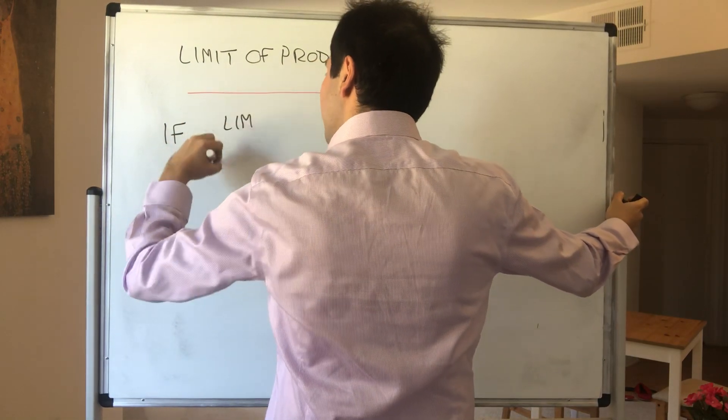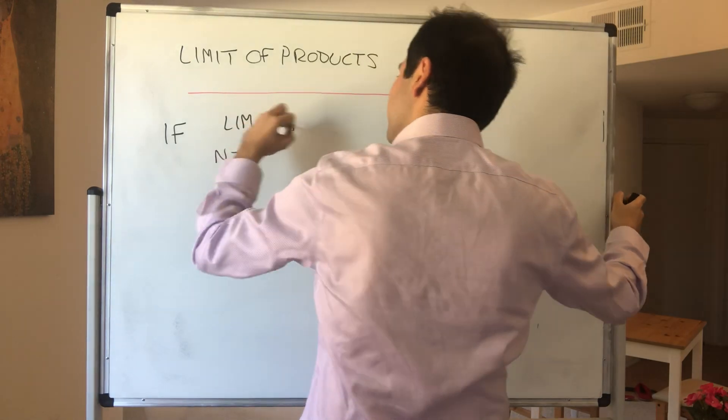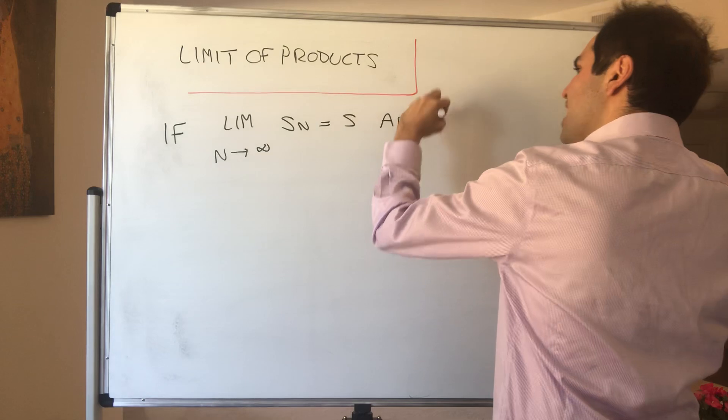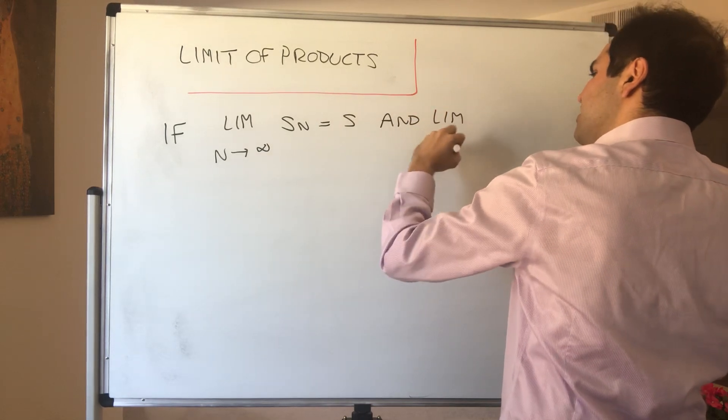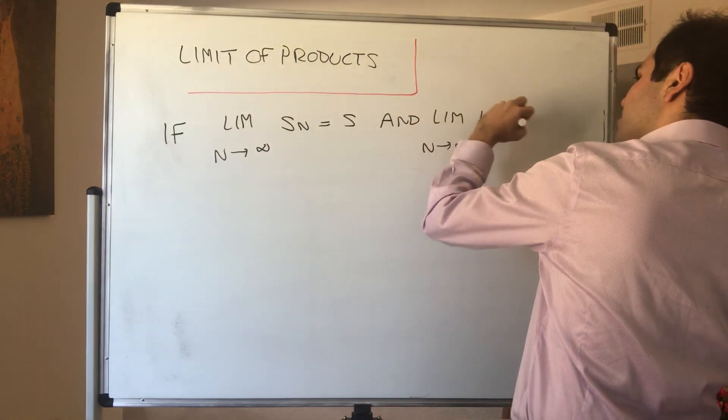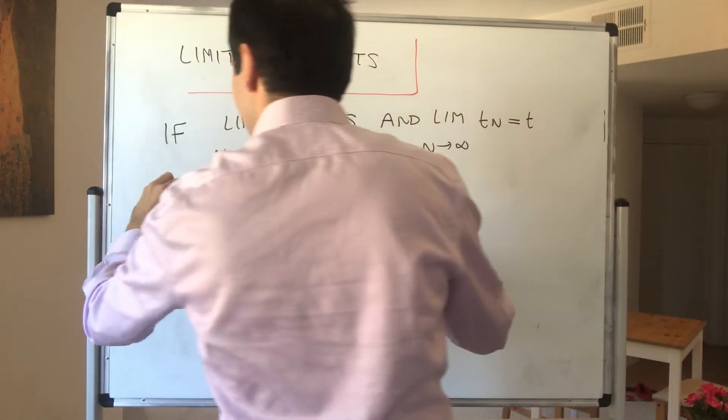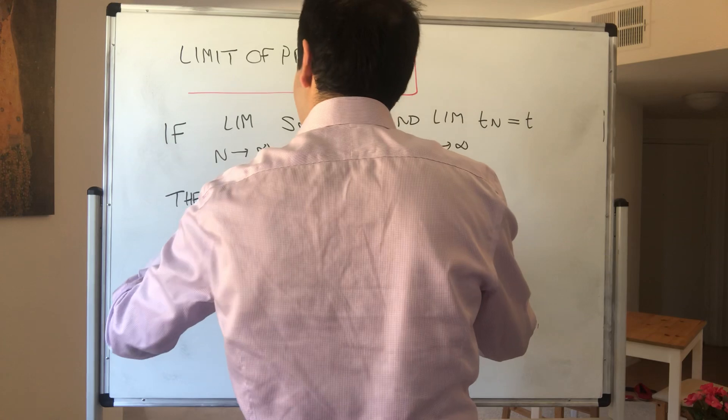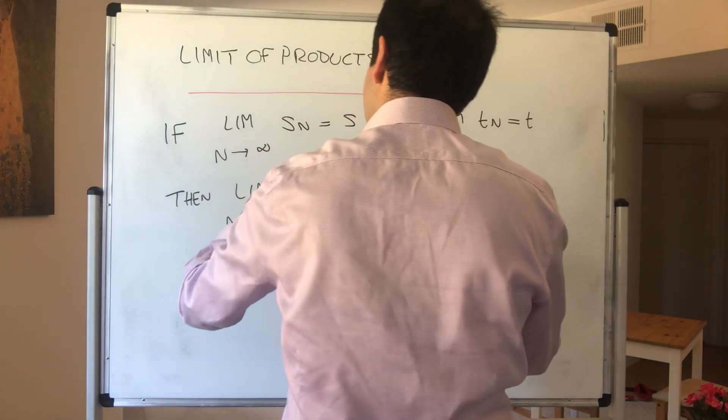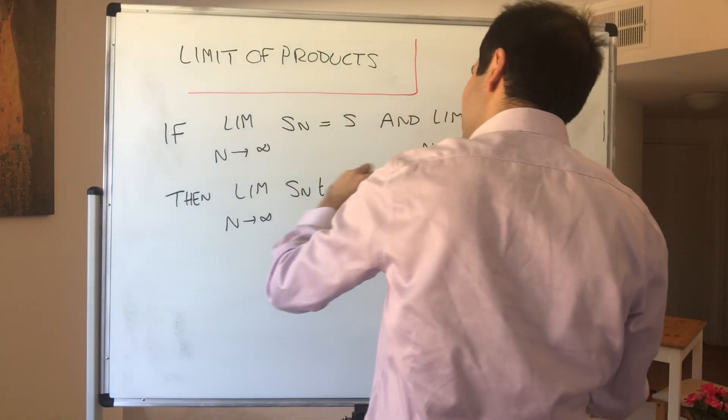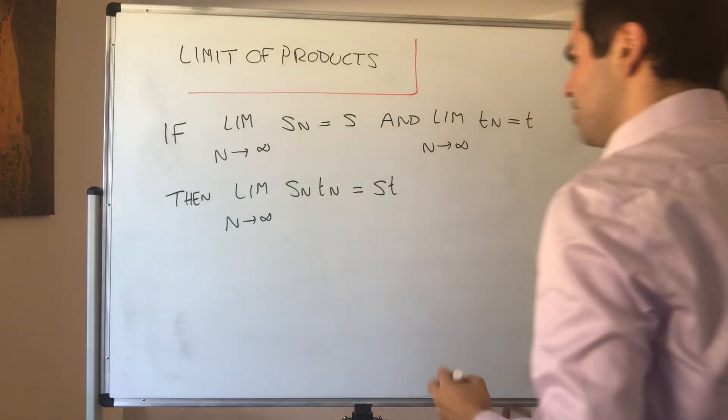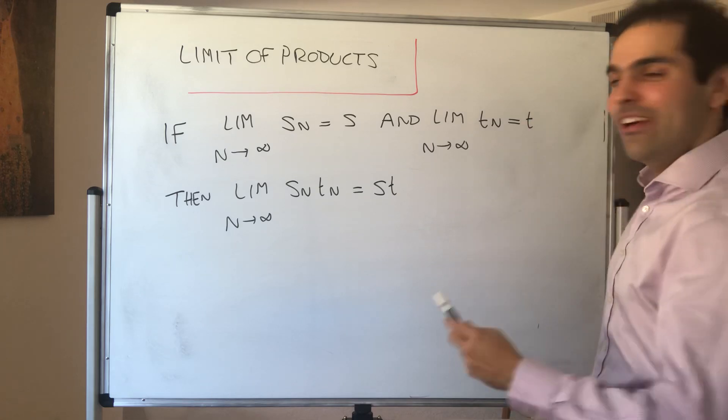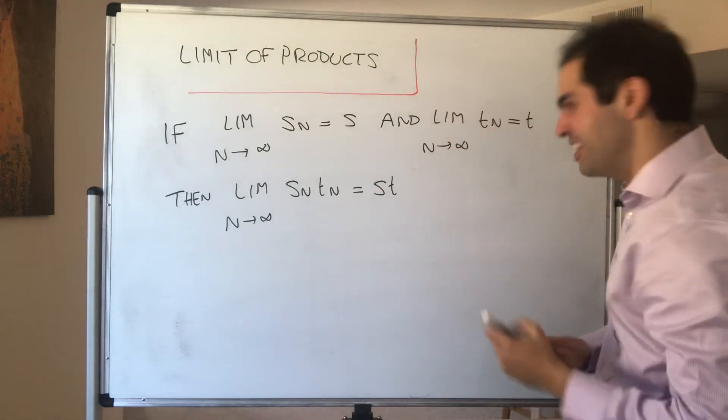So suppose Sn is a sequence that converges to S and Tn is a sequence that converges to T. Then what we want to show is that Sn times Tn converges to St. You might say it's stupendous, but I say no, it's stupendous.